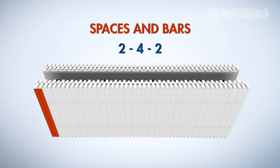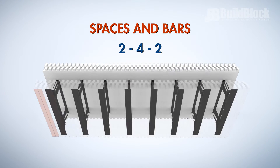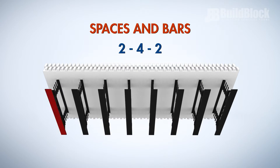The second number, 4, means the block needs four webs. BuildBlock ICF webs are spaced every six inches. In this example, there would be 18 inches between the four webs and an extra two inches for the final web itself.